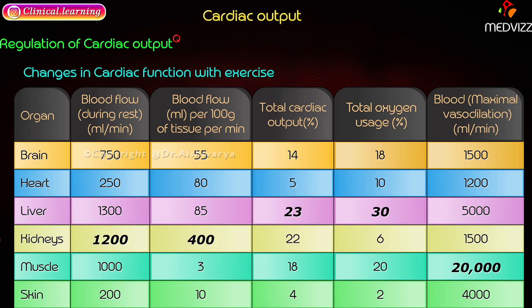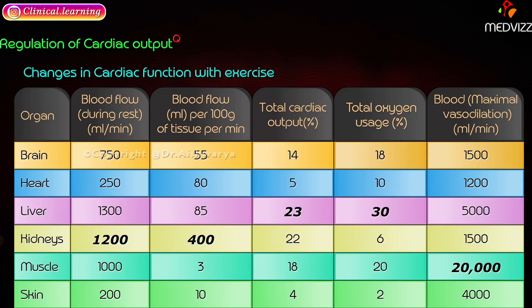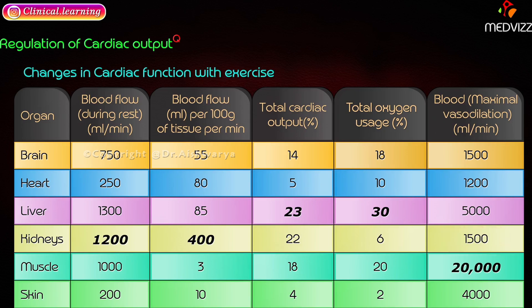The kidneys receive 1200 ml per minute during rest, which is 400 ml per 100 grams of tissue per minute — the highest blood flow per unit weight of any organ. Total cardiac output to the kidneys is approximately 22 percent, and total oxygen usage is 6 percent. With maximum vasodilation, the kidneys receive approximately 1500 ml per minute.